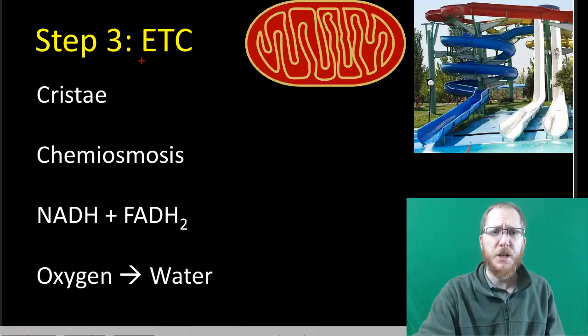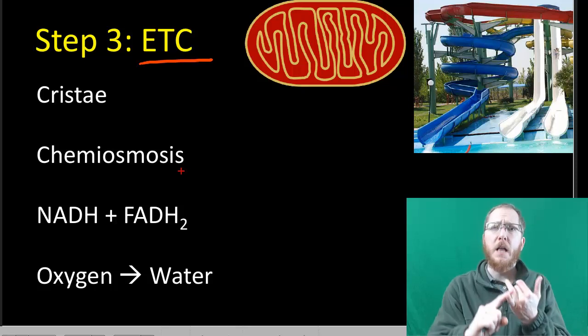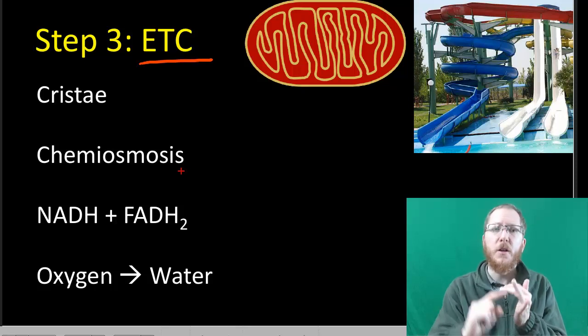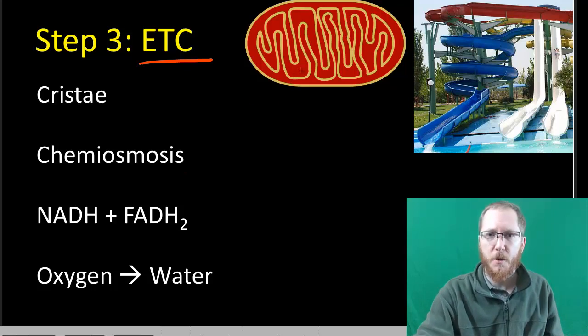Finishing up our aerobic stuff first. At this point, we've talked about glycolysis, which occurs in the cytosol, and Krebs, which occurs in the mitochondrial matrix, the middle-most part.